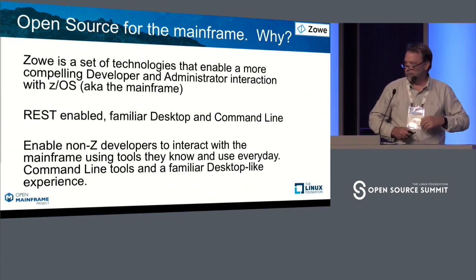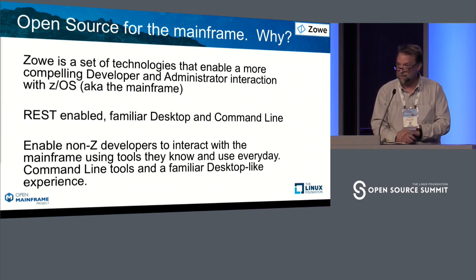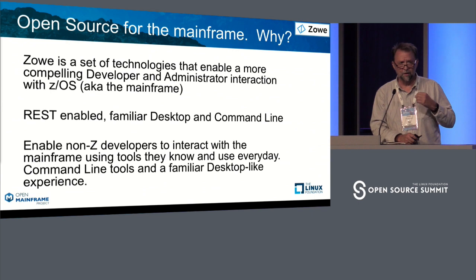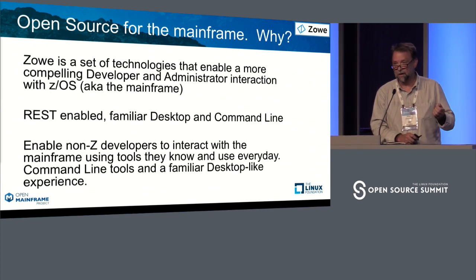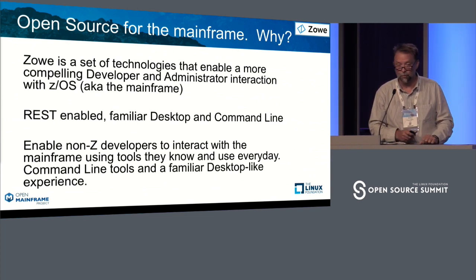Just for background: the mainframe is typically referred to as the IBM Z platform. It's hardware, runs a variety of operating systems, and what we refer to when we're talking about Z is ZOS, which typically means it's a business platform. So if you went to Starbucks or had dinner and used a credit card, most likely part of that transaction went through a mainframe somewhere in the world.